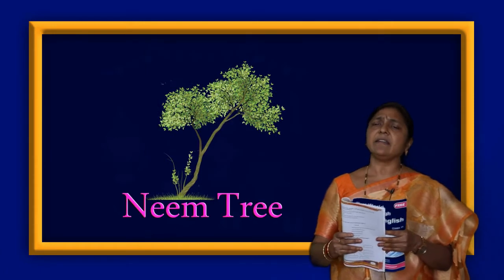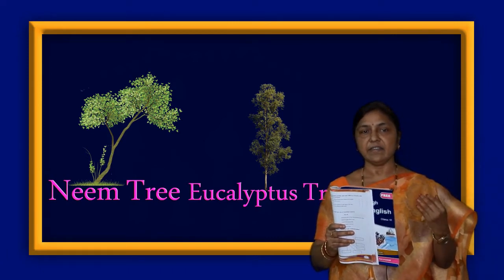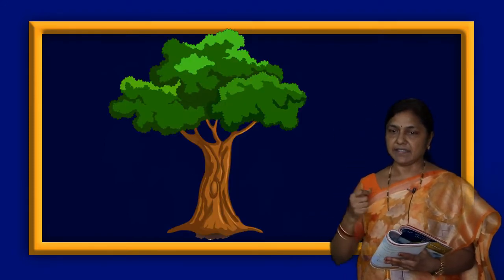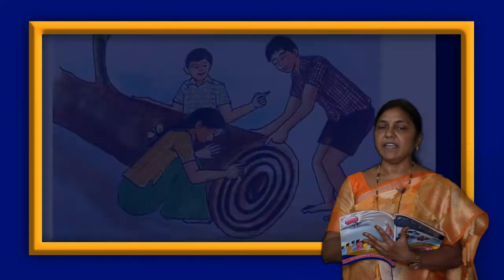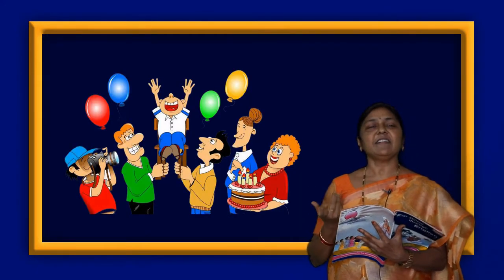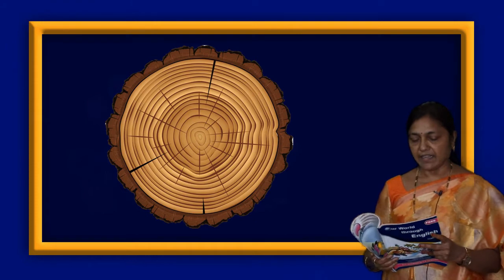It lives year after year. In our country, we have neem trees and eucalyptus trees, and so many trees that live year after year. Every year they get a birthday present — it grows a little bigger. After one year, it becomes one ring. That is the gift of a tree. We also grow year after year and celebrate our birthday. The same way, the trees celebrate their birthday and get one ring every year.